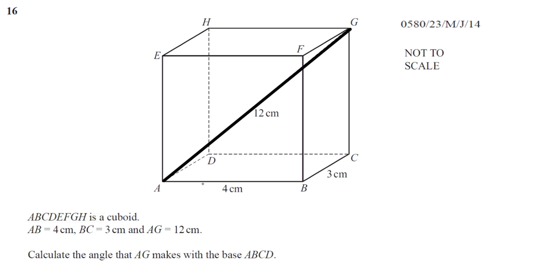Now the angle that makes with the base ABCD, what does that mean? Well, you can think of that in a number of ways. The angle between a line and a plane - ABCD is like a plane, flat surface. The angle between a line and a plane is the angle between that line, and you can think of it in a few ways.